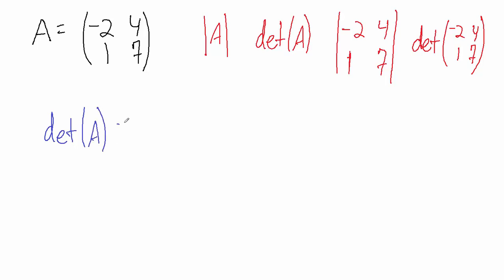So when we have a 2x2 matrix, if you want to find the determinant, we always do the same thing. We always multiply the top left number, which in this case is -2, by the bottom right number, which in this case is 7, and then we subtract the bottom left number times the top right number. So the bottom left number is 1, the top right number is 4.